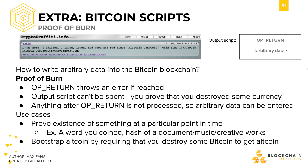Below OP_RETURN, there's a space to put whatever you want. One thing you can do with this concept of burning Bitcoin is that you could bootstrap an altcoin, requiring that you must destroy some Bitcoin and show a proof of this in order to get some altcoin. Some altcoins, such as Calcoin, do this as well.